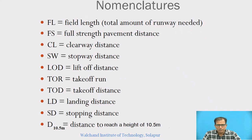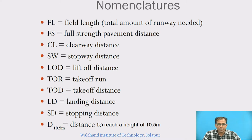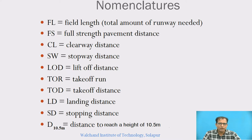These are the notations we are using in deriving the basic runway length. FL indicates field length, FS indicates full strength pavement distance, CL indicates clearway — like that we have so many notations we are going to use while deriving the basic runway length.